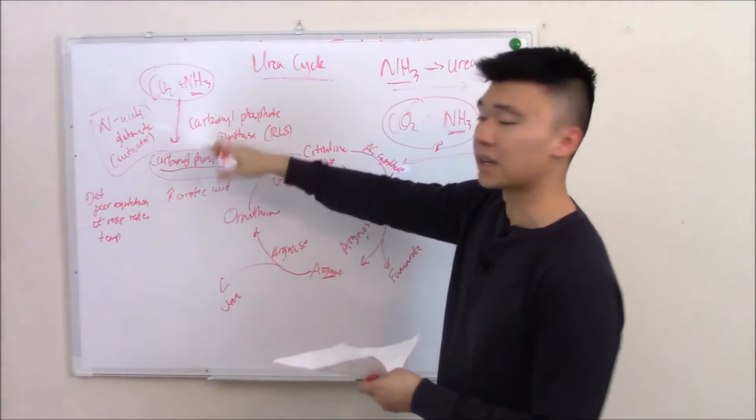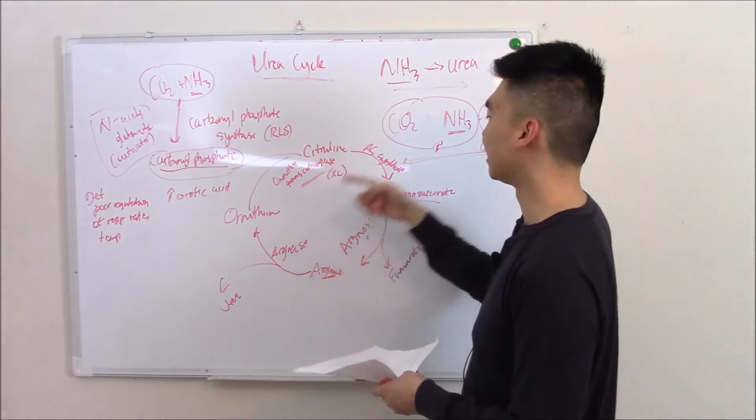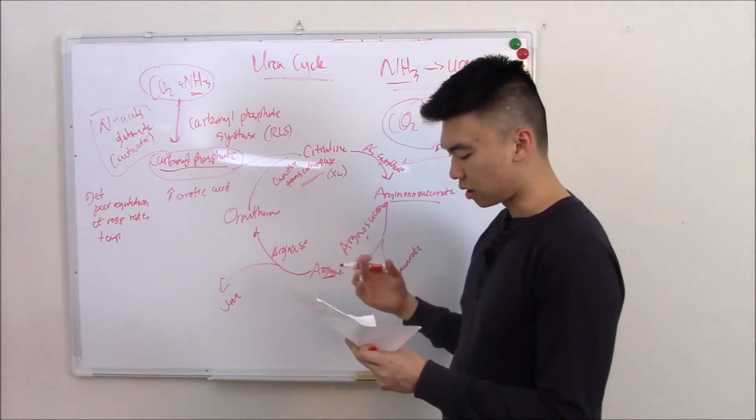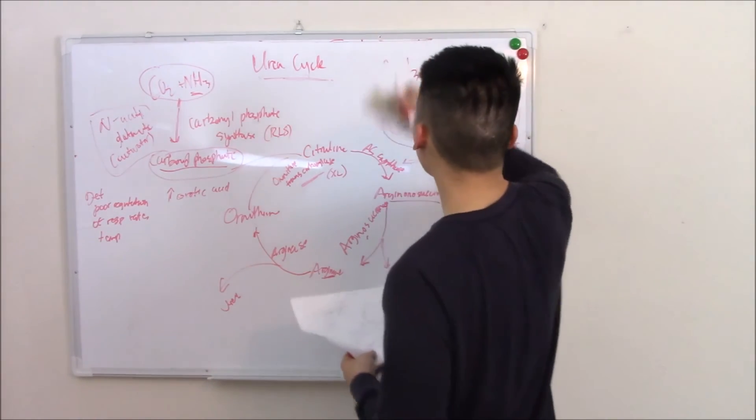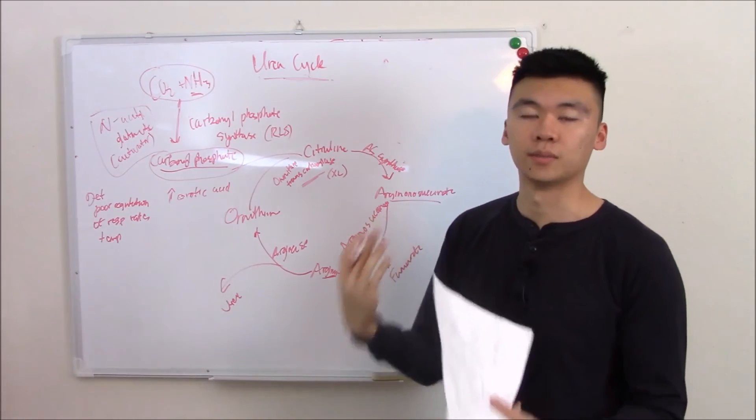So those are the main ones, but again you can have a deficiency in any of these enzymes. They just cause what is known collectively as hyperammonemia - too much ammonia.